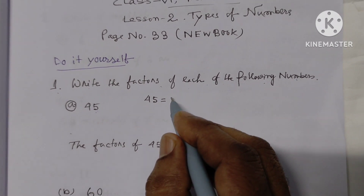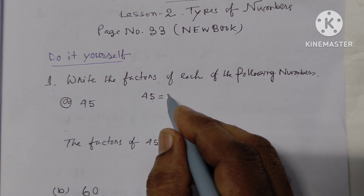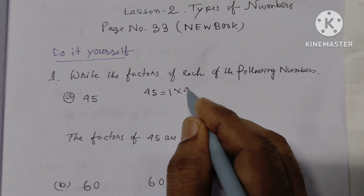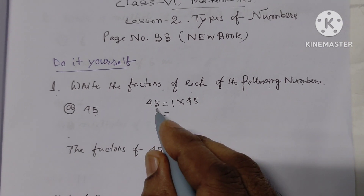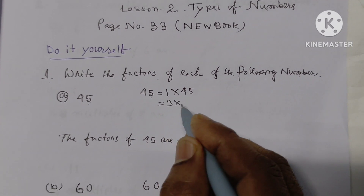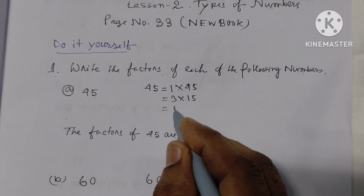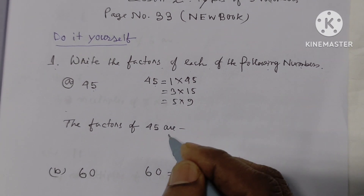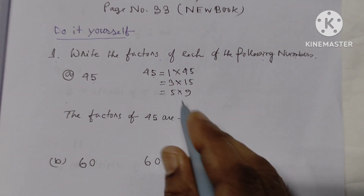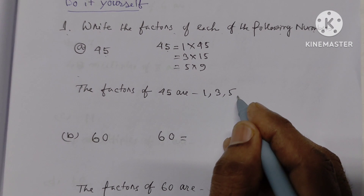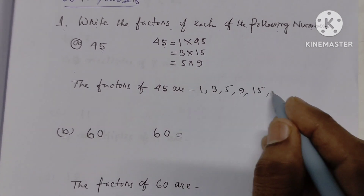For 45, we express it as: 1 x 45, 3 x 15, 5 x 9, and 9 x 5. So the factors of 45 are: 1, 3, 5, 9, 15, 45.